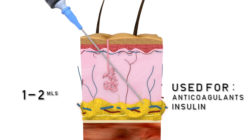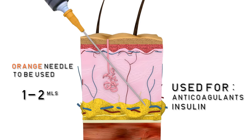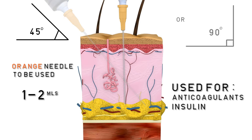This is found by lifting the skin to raise the adipose tissue from the muscle layer, which will determine the injection angle. The nurse has to calculate whether to use a 45 degree angle or a 90 degree angle to reach the subcutaneous site.